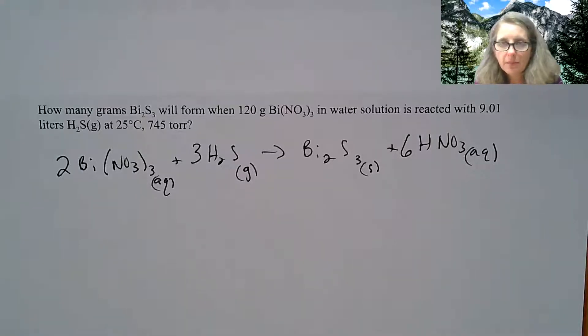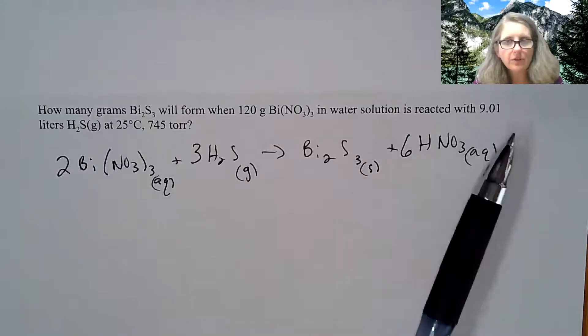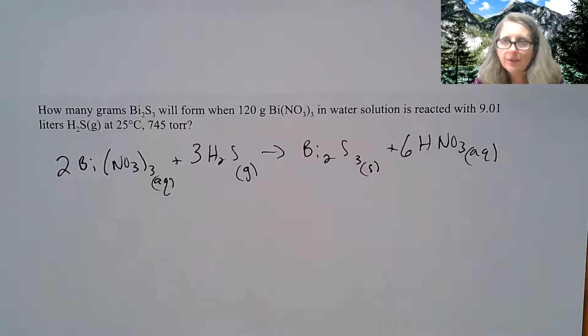Anytime you see a problem like this, write a balanced chemical equation. On the test or quiz, I will give you that. Anytime you're given a gas, a temperature, a pressure, and a volume, think PV equals nRT. You can always find stuff from that.